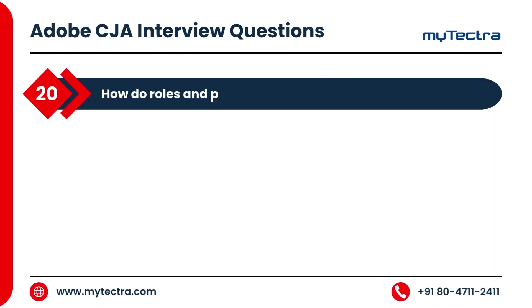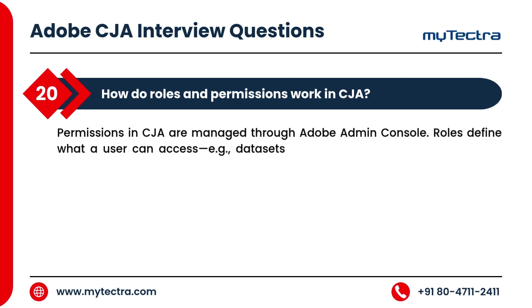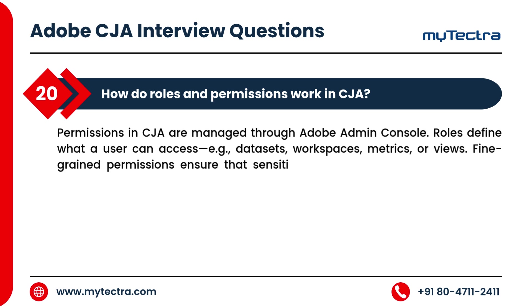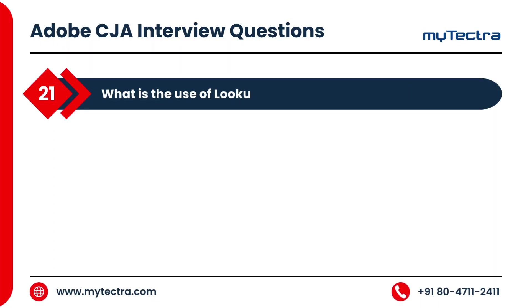How do roles and permissions work in CJA? Permissions in CJA are managed through Adobe Admin Console. Roles define what a user can access, such as datasets, workspaces, metrics, or views. Fine-grained permissions ensure that sensitive data is only visible to authorized users, supporting privacy and data governance policies.